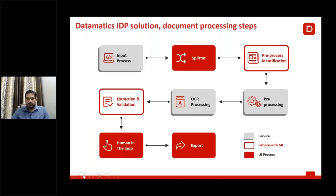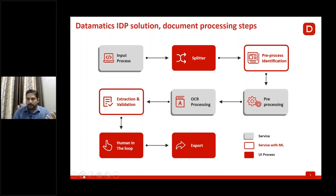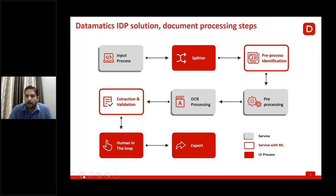The processing flow: first, ingest data from unstructured or semi-structured documents. Red blocks indicate machine-learning-powered services; UI processes include a splitter for multi-invoice documents. Then pre-processing and OCR — either the built-in engine or a licensed engine of choice. Next, extraction and post-processing including validation, followed by optional human-in-the-loop review. Finally, export the output in JSON or CSV format, or via API.